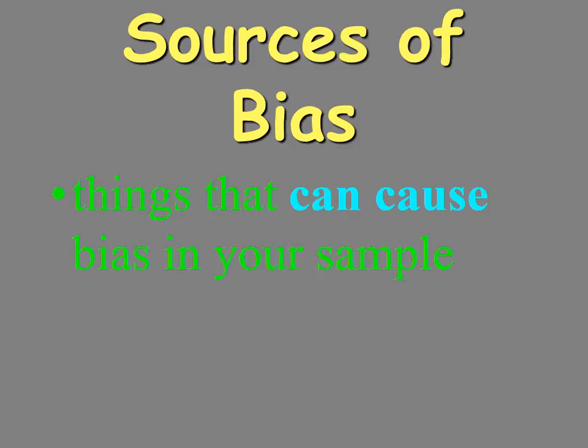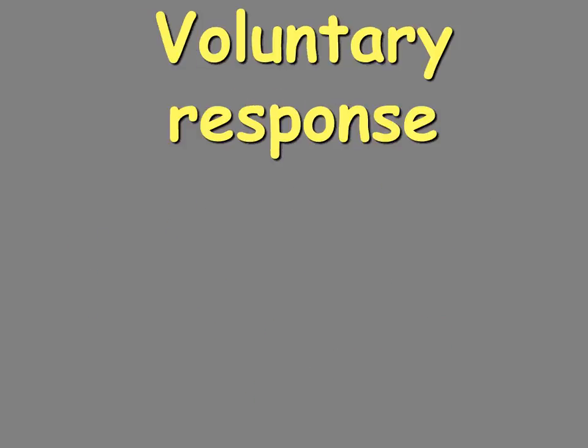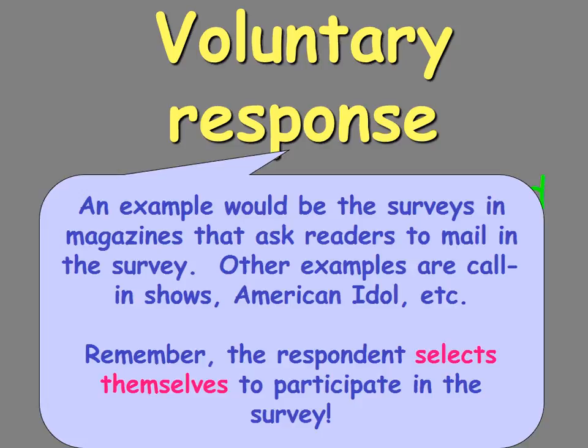Sources of bias are things that can cause bias in your sample. Voluntary response is probably the number one area of bias in any survey or opinion poll. Based on the term you can guess what it is: people can choose whether to respond or not. When this happens, we're going to get extreme viewpoints. If a person is in the middle, they're not as likely to call in. But if you're really against something or really in favor of something, then you're going to volunteer to respond.